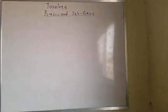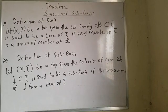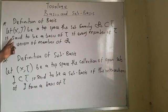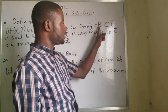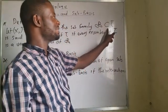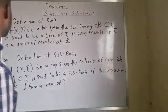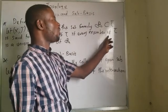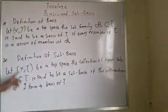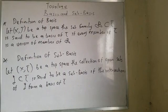Now, what you need to understand basis and sub-basis. Look at this definition. Definition of basis: Let (X, τ) be a topological space. The sub-family B, which is basis, is a subset of τ, said to be a basis of τ if every member of τ is a union of members of the basis.